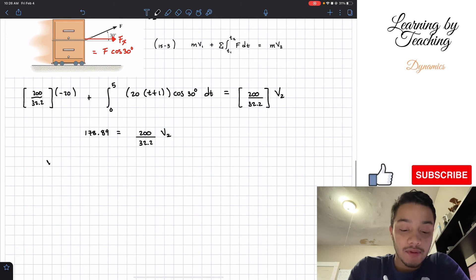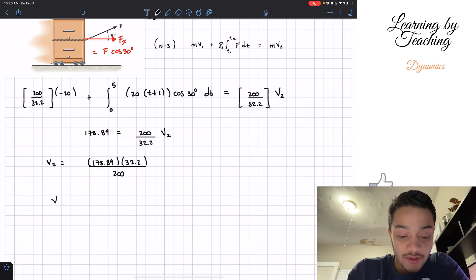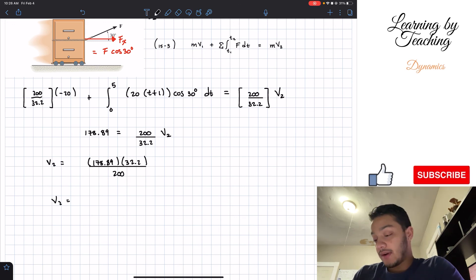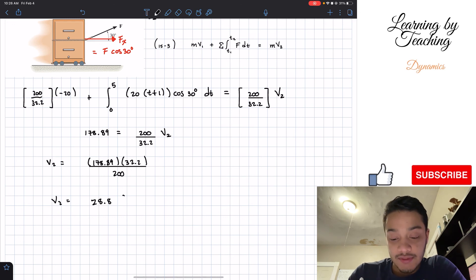If we keep solving for our velocity at the second point, it will be our 178.89 multiplied by 32.2 and divided by 200. If we do this, we'll have a total of 28.8 feet per second.